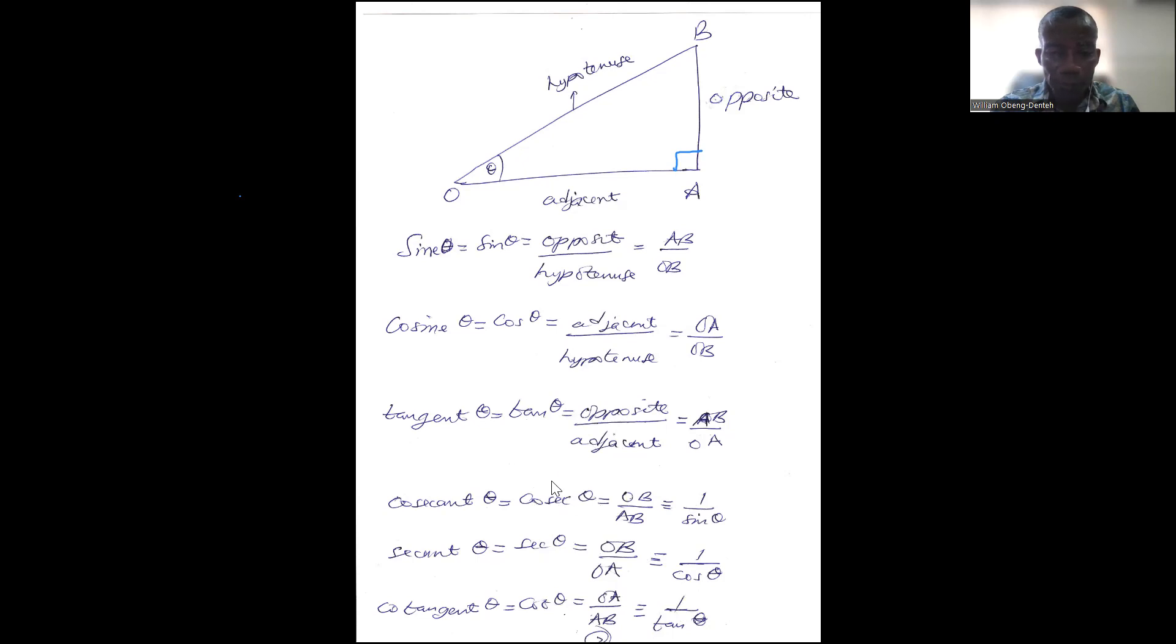Or we'll say that cosec theta is the reciprocal of sine theta. So AB over OB becomes OB over AB. Cos theta, OA over OB, now becomes OB over OA. And tan theta, AB over OA, becomes OA over AB under cot theta.